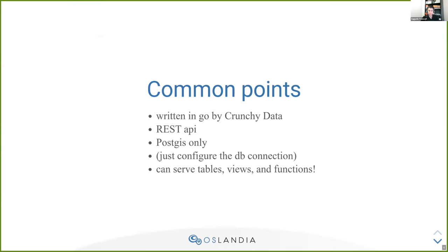So let's talk about the common points between these two servers. They are written in Go, developed by CrunchyData. They present a REST API. They connect to PostGIS only — a choice has been made here to support only one data source — and it allows them to really leverage PostGIS to the maximum. To get going, you just need to configure the DB connection, basically. And here you go — you can serve tables, views, and also functions. And actually, the fact that you can serve functions, you can call functions in PostGIS, is for me a really interesting feature and one of the most important of these servers.